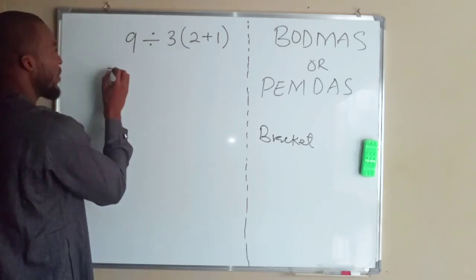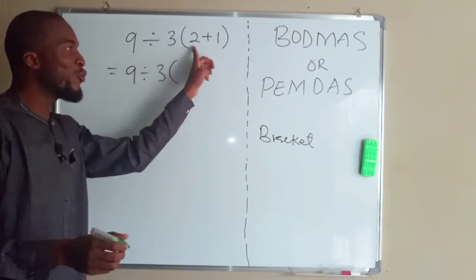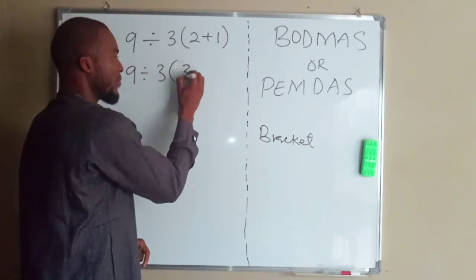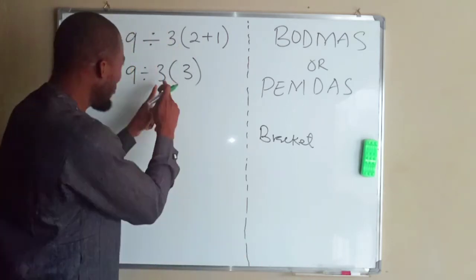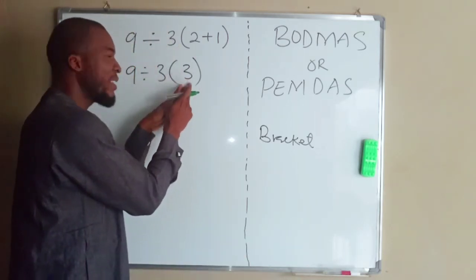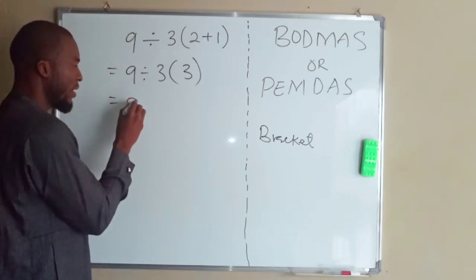This becomes 9 ÷ 3, and in the bracket we have 2 + 1 which equals 3. Remember, between three and this three there is multiplication, so this can be written as 9 ÷ 3 × 3.